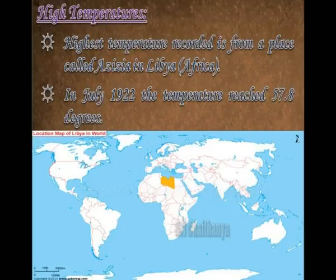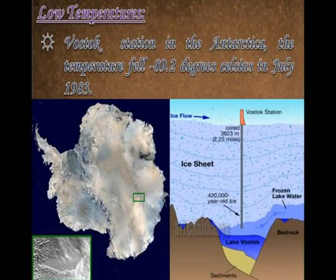High Temperatures: The highest temperature ever recorded was at a place called Azizia in Libya. In July 1922, the temperature reached 57.8 degrees Celsius. Low Temperatures: At Vostok Station in Antarctica, the temperature fell to minus 89.2 degrees Celsius in July 1983.